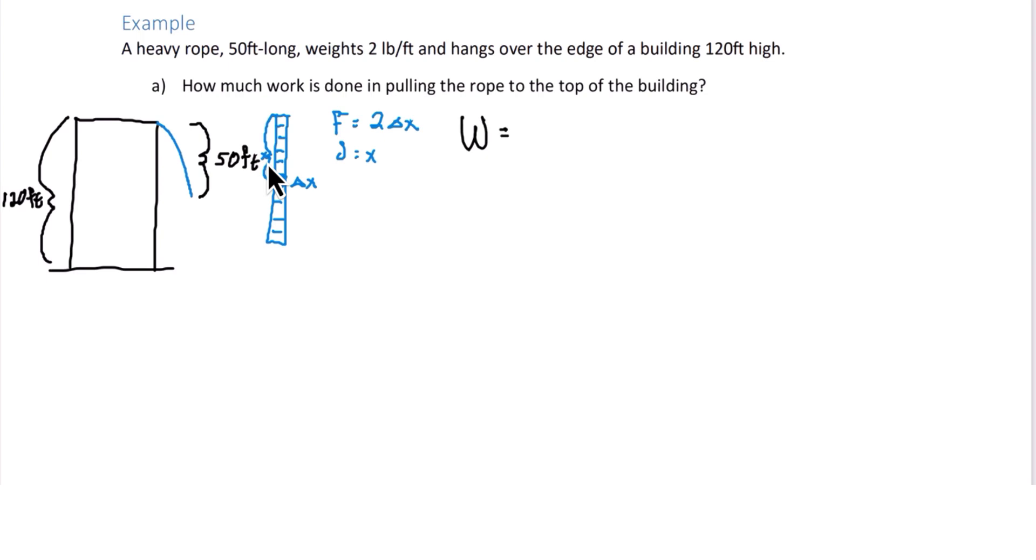The work is going to be the limit as n goes to infinity of the sum i equals one to n of two times x times delta x. And technically we need the x sub i. We'll now rewrite this using our limit notation. We have the integral, and now the limits of integration. Let's go back to our rope, the zoomed in version. Let's start the zero at the top, and it goes to 50 feet long. So we're integrating from 0 to 50. Function is 2x, and we now have dx.